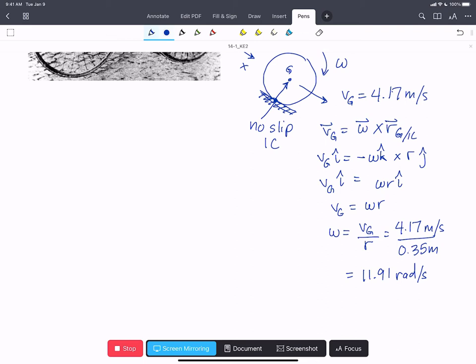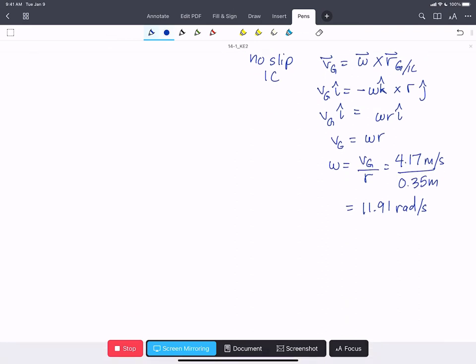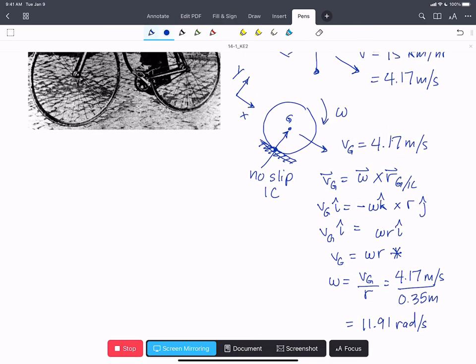But we'll find, actually, we don't need to figure out omega to solve this problem, although we do need to know this relationship. So we can make an expression for the kinetic energy total of the bicycle is going to be the kinetic energy of the frame plus 2 times the kinetic energy of a wheel.